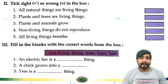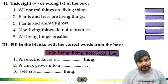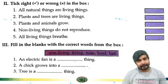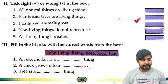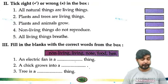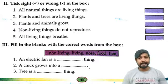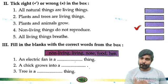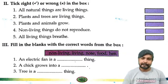Number 2: Plants and trees are living things — this is true, tick. Plants and animals are living things and they can grow. Iska answer sahi hai, tick.